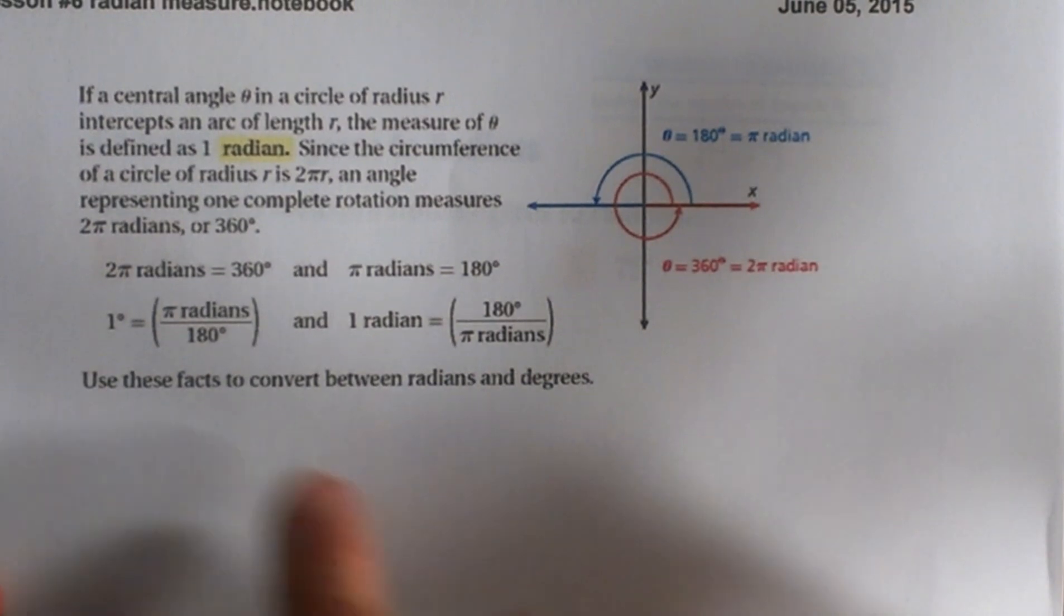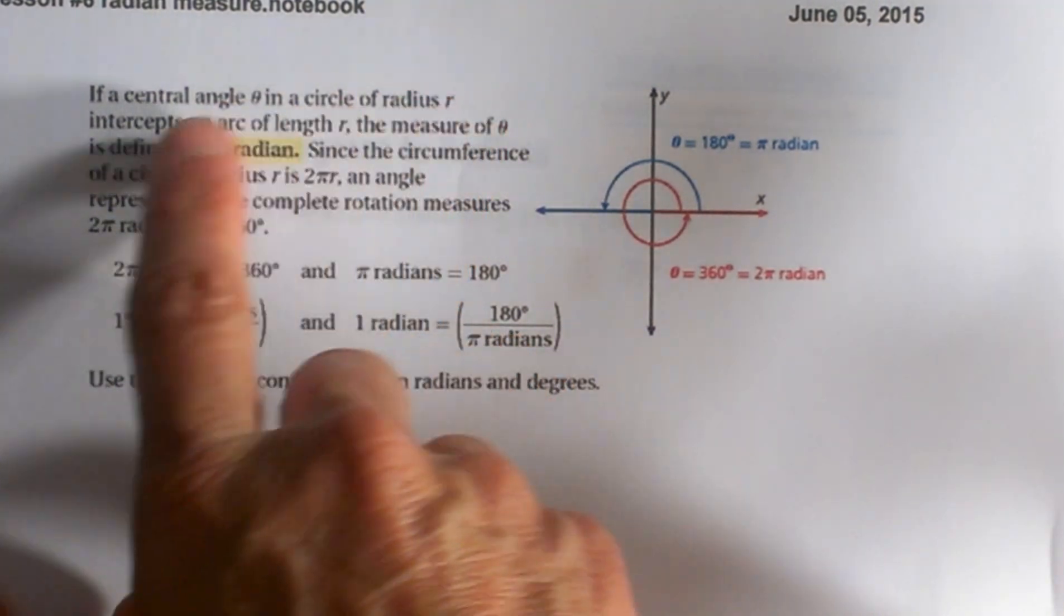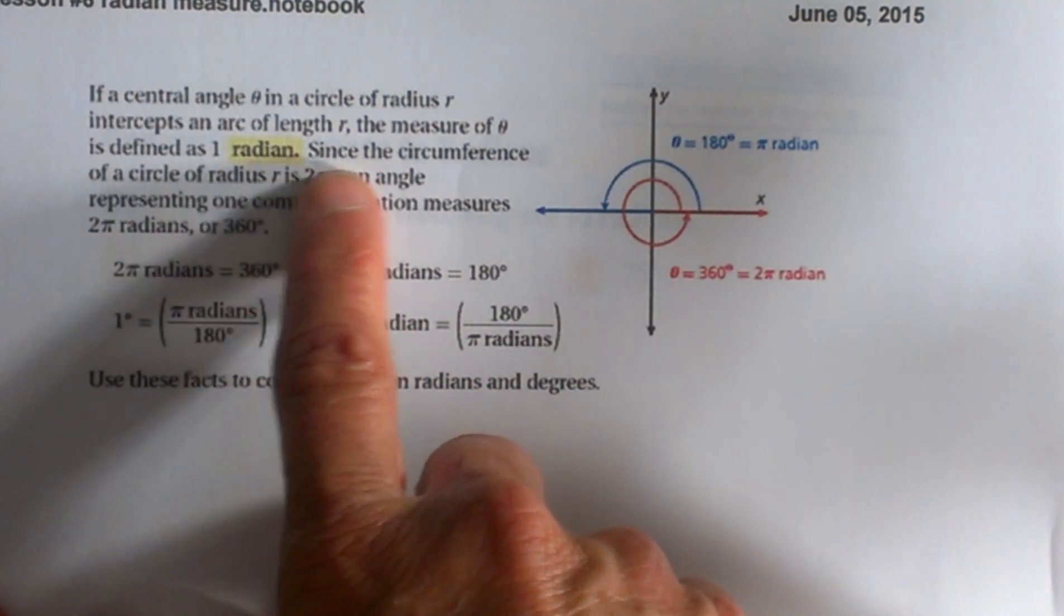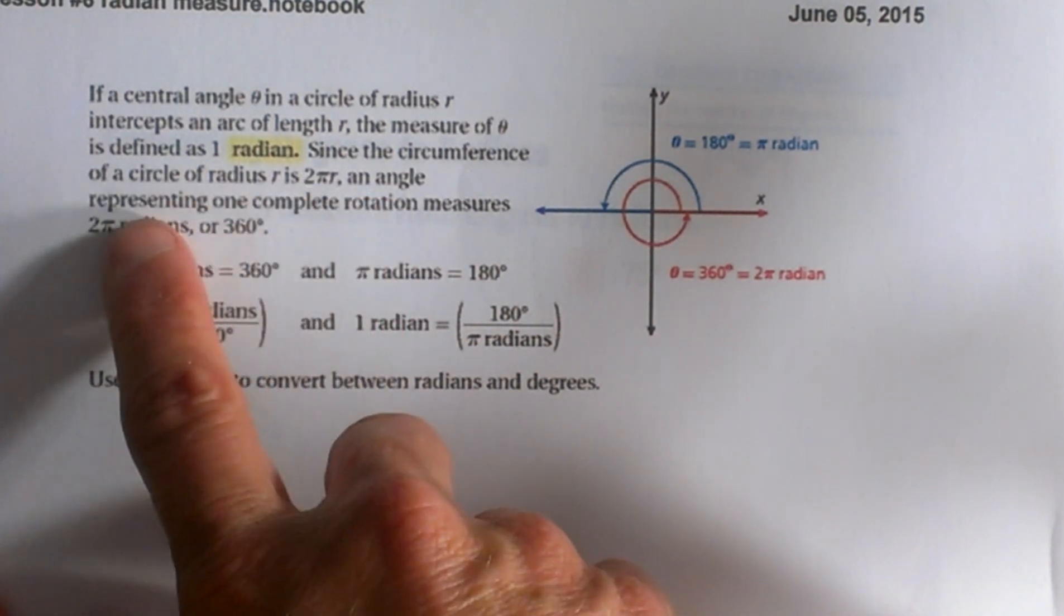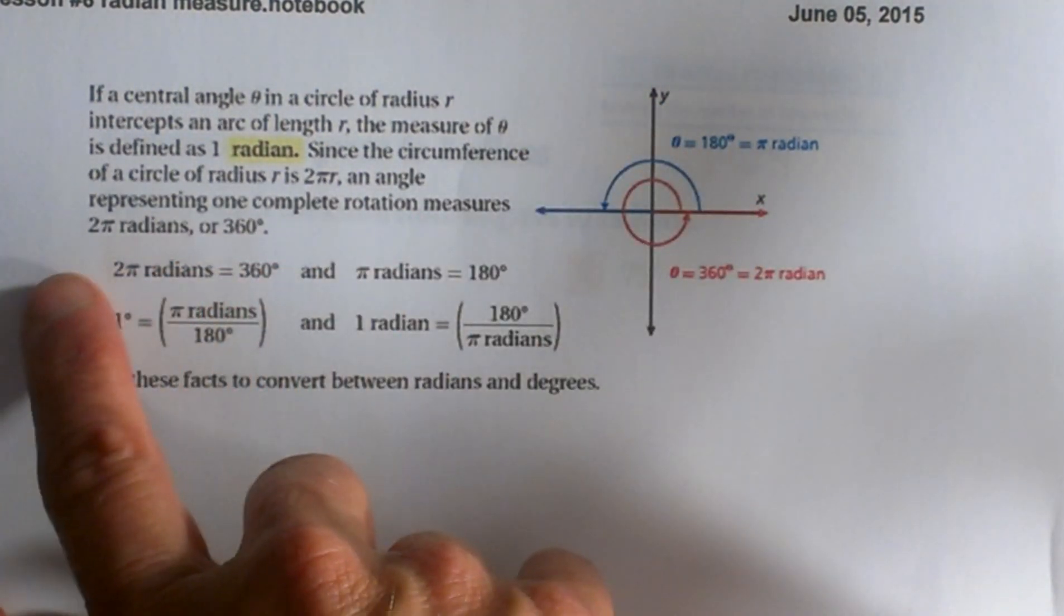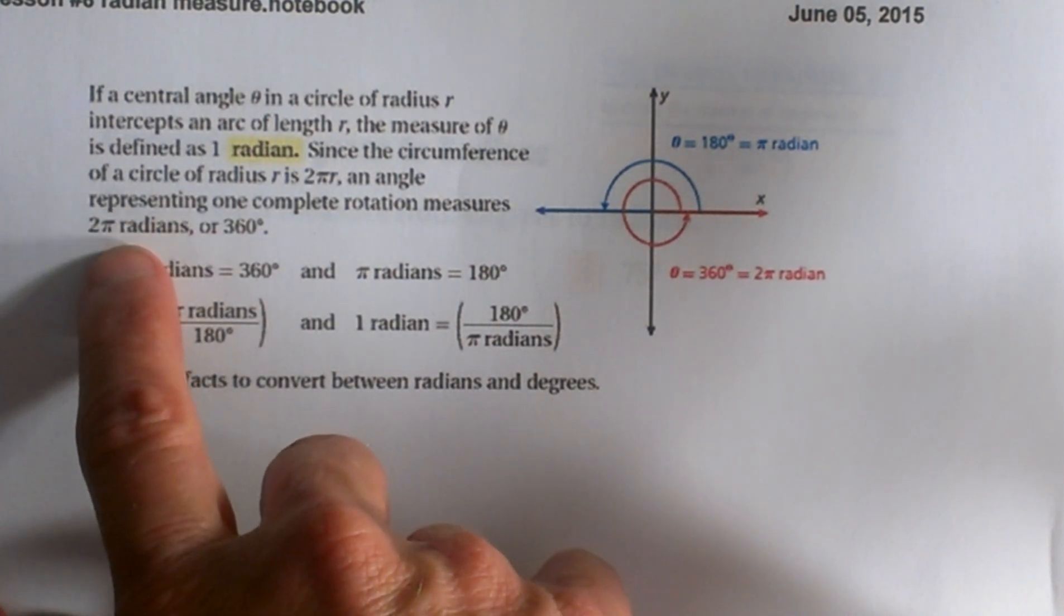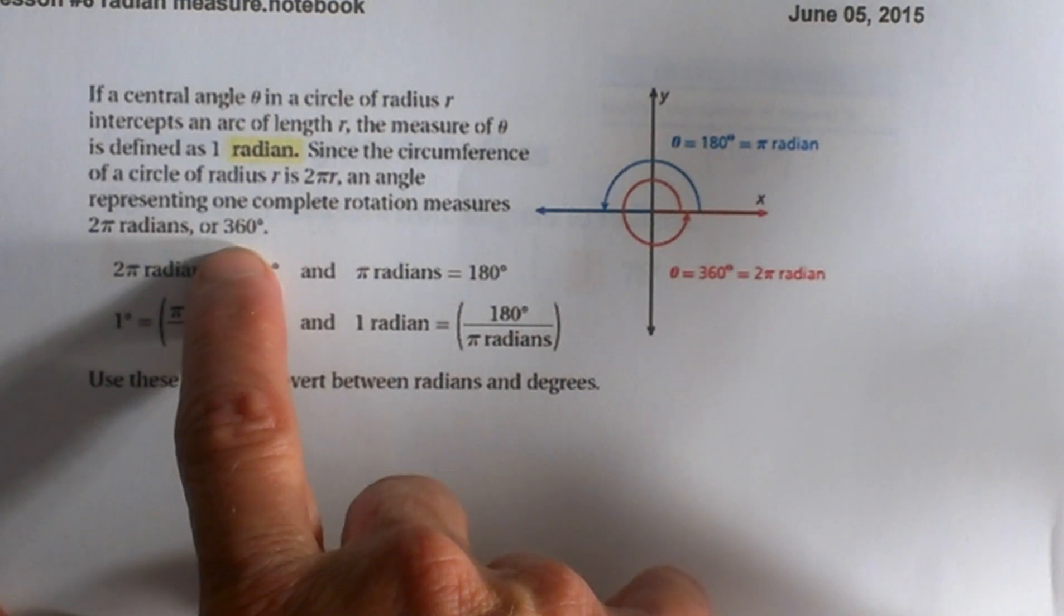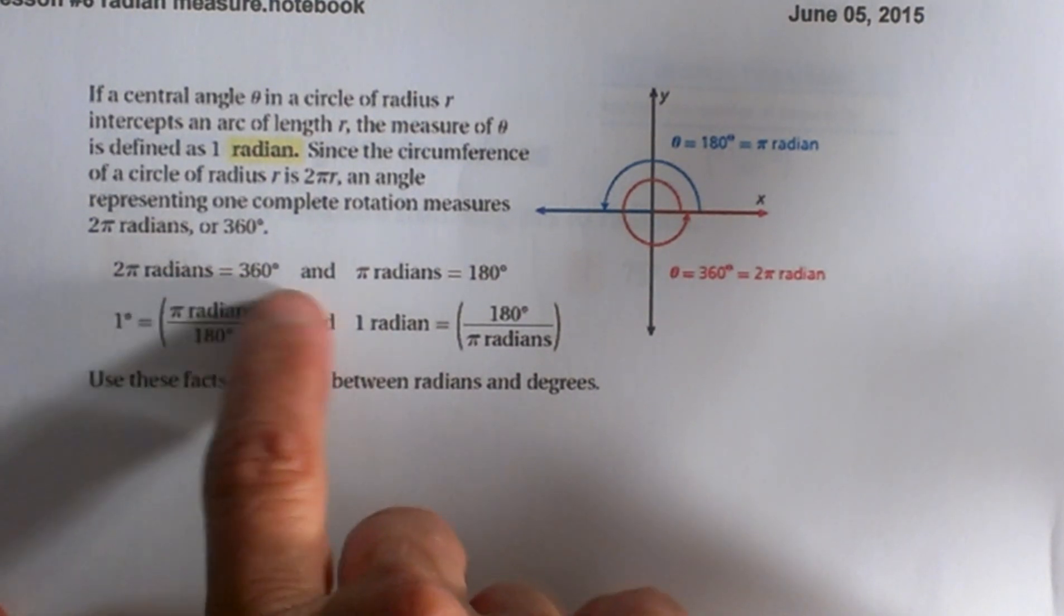If a central angle theta in a radius intercepts an arc that is also r, then the measure is defined as 1 radian. Since the circumference of a circle is 2πr, then an angle representing one complete rotation equals 2π. So 2π radians is one full circle, which is equivalent to 360 degrees.